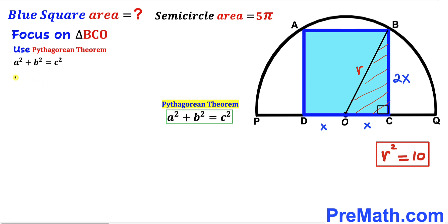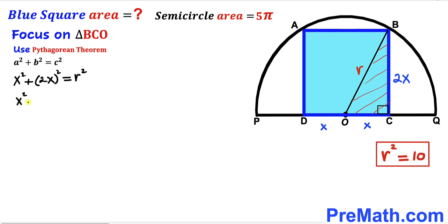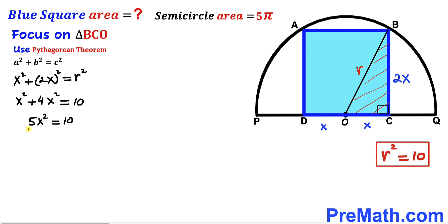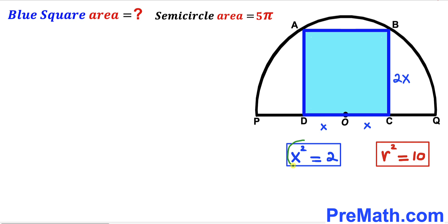Filling in the Pythagorean formula: x squared plus (2x) squared equals r squared. Simplifying: x squared plus 4x squared equals 10, since our r squared value is 10. Combining like terms gives us 5x squared equals 10. Dividing both sides by 5, the 5s cancel, so our x squared value turns out to be equal to 2.